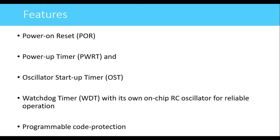The PIC16F877 has a watchdog timer with its own on-chip RC oscillator for reliable operation. The watchdog timer monitors CPU operation — if the CPU enters an infinite loop or stops working properly, the watchdog timer overflows and resets the CPU, causing it to restart from the beginning. If the CPU is working properly, it resets the watchdog timer periodically to prevent overflow. The watchdog timer uses its own RC oscillator rather than the CPU oscillator.